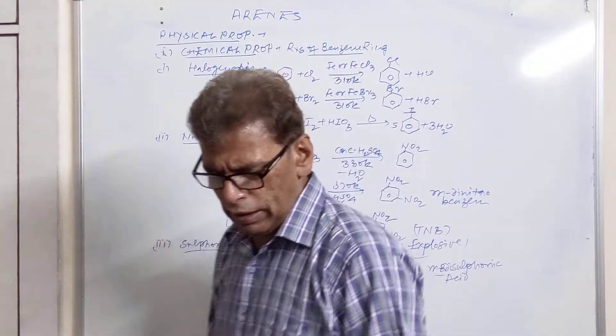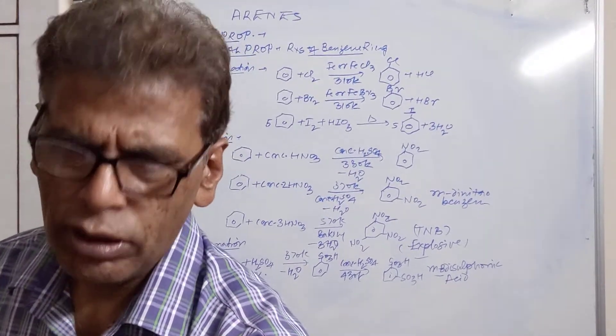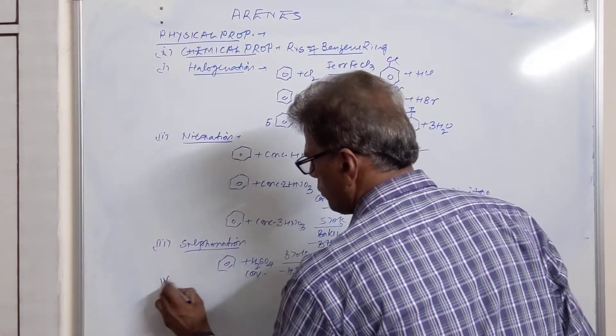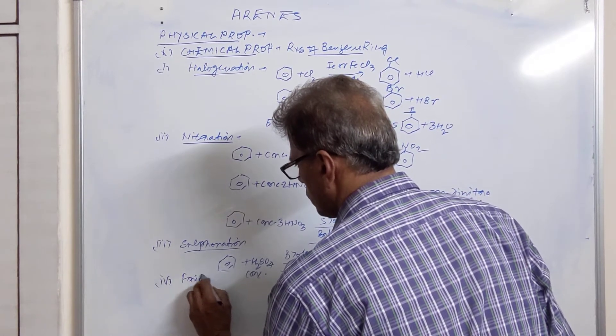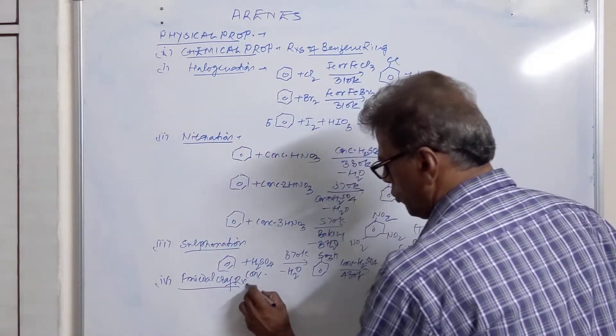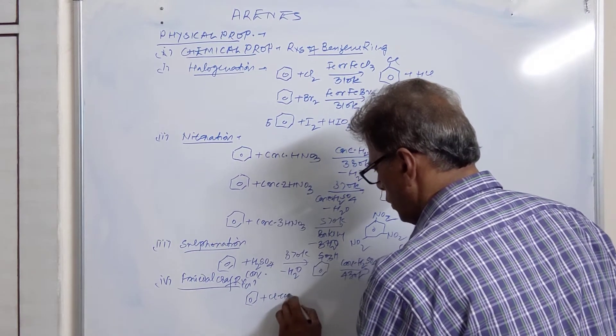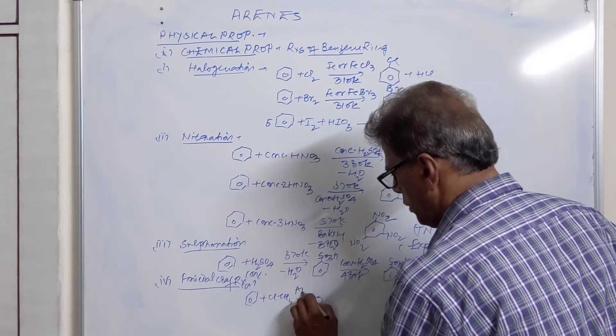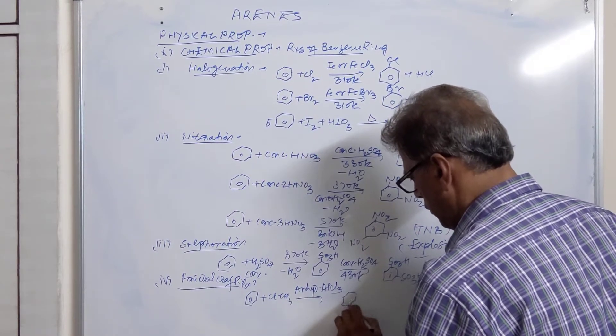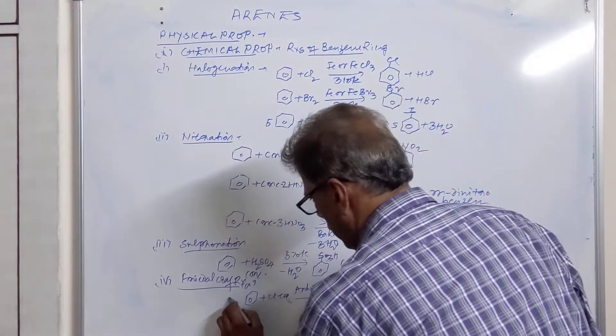So these are the three reactions of benzene ring. Now we come to the fourth reaction that is called Friedel-Craft reaction. These are two reactions. One is Friedel-Craft alkylation. Methyl chloride is used as an attacking agent in the presence of anhydrous AlCl₃ producing toluene plus HCl.